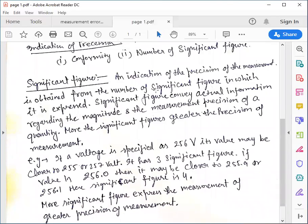An indication of the precision of measurement is obtained from the number of significant figures in which it is expressed. Significant figures convey actual information regarding the magnitude and the measurement precision of a quantity.